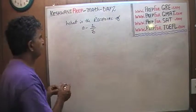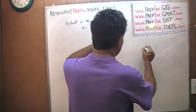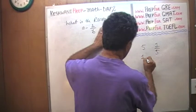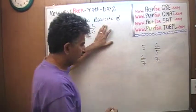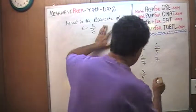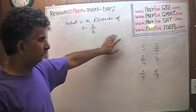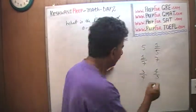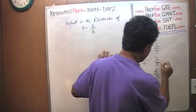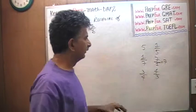Here we go. The very first thing we need to do is understand what reciprocal means. For example, the reciprocal of five is one over five. The reciprocal of one over seven is seven. The reciprocal of three-quarters is four-thirds, and so forth. One over seven becomes seven because seven is seven over one — which of course is seven. Five becomes one over five. Three-quarters becomes four-thirds. These are called reciprocals.